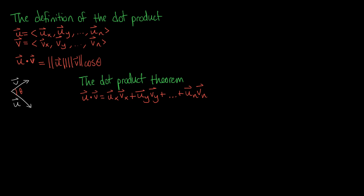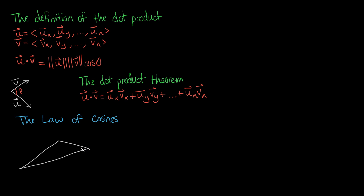A quick refresher on the law of cosines: it's a way of using trigonometry on a triangle that doesn't have a 90-degree angle. So if we draw some triangle with no right angle — just a regular old triangle — this is really useful, because most triangles in mathematics aren't actually right triangles.